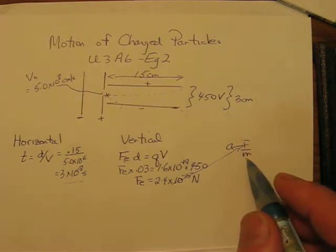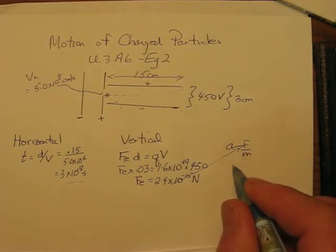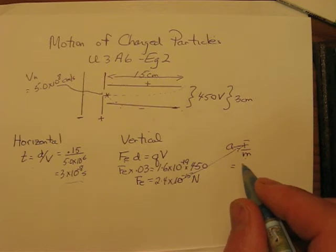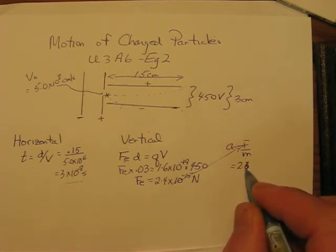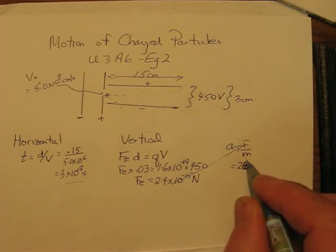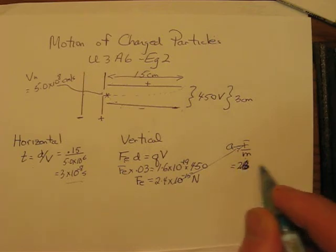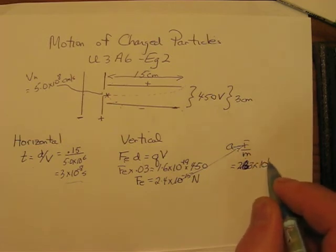And that'll give you a vertical acceleration, which is 2.63, 2.63. We'll make that 2.63 times 10 to the 15 meters per second squared.